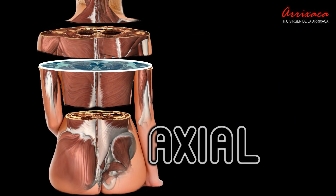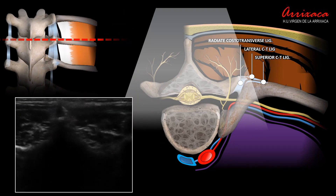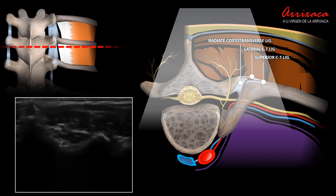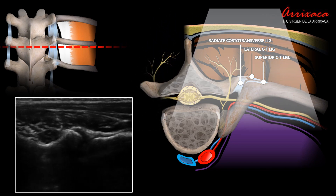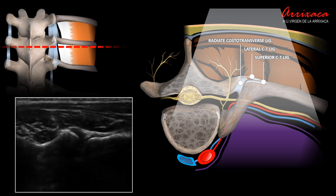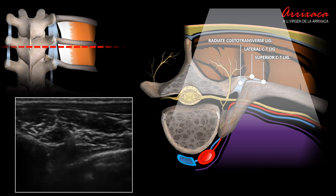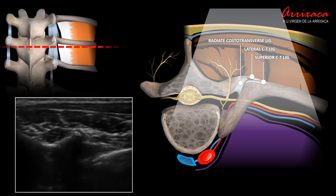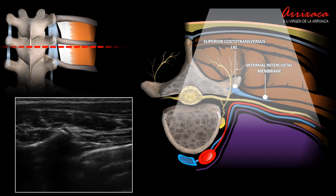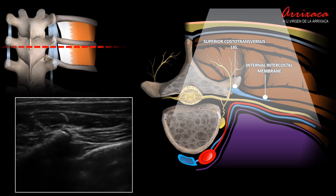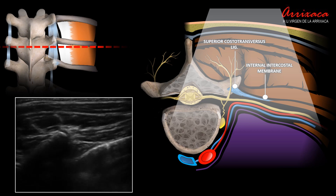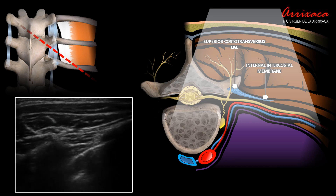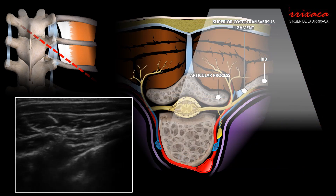Reconstructing the cross-section in an axial view and beginning the exploration in an axial plane, over the midline of the thoracic spine we will identify the bony ridge of the spinous process and vertebral lamina. As we move the transducer laterally, the transverse process and costotransverse joint will come into view. Shifting the transducer slightly caudally will allow us to identify the transverse process and the exit of the paravertebral space. We can rotate the transducer counterclockwise until the shadow generated by the lower rib is observed.